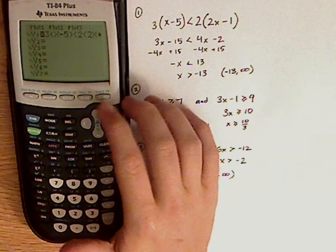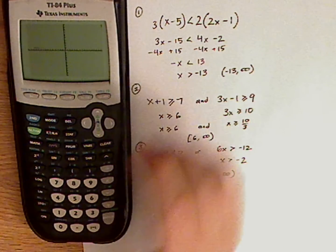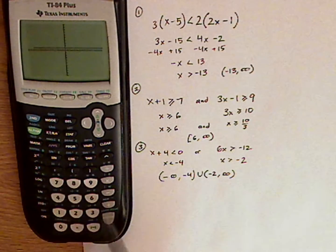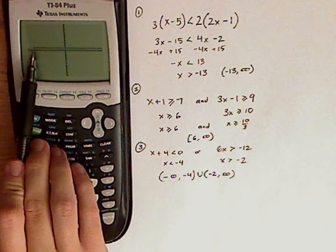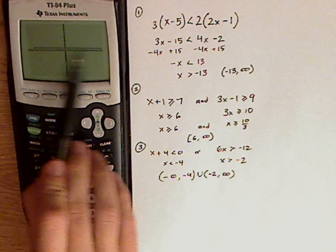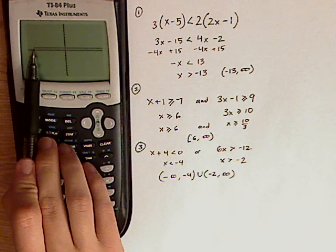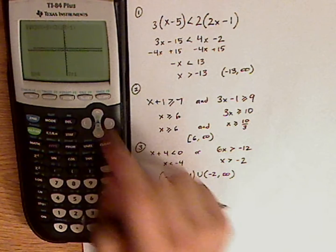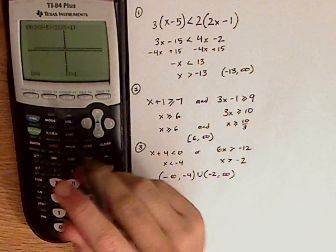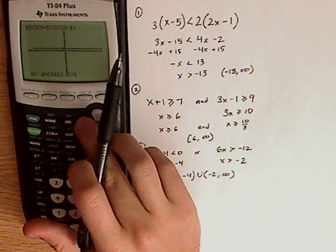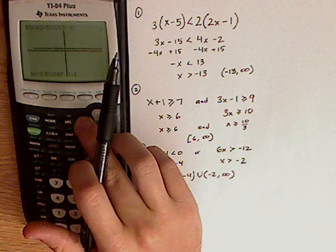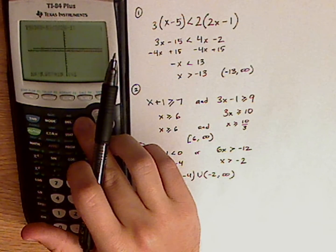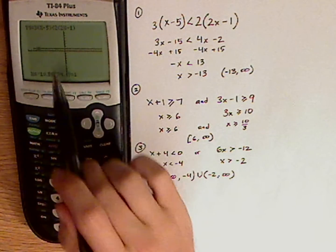Then what you want to do is you want to hit graph. And notice on your graph, this line right here is the solution. It's from negative 13, and then it goes all the way over. Hit trace, just to double check, notice it's right on the line, and the line is at y equals.